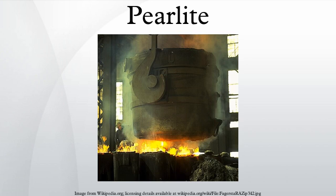The eutectoid composition of austenite is approximately 0.76% carbon. Steel with less carbon content will contain a corresponding proportion of relatively pure ferrite crystallites that do not participate in the eutectoid reaction and cannot transform into pearlite. Likewise, steels with higher carbon contents will form cementite before reaching the eutectoid point.